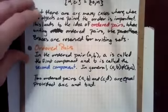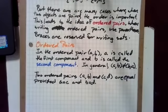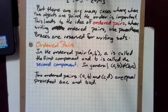In the ordered pair (a,b), a is called the first component and b is called the second component. In general, (a,b) is not equal to (b,a) unless a equals b.